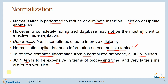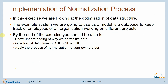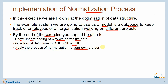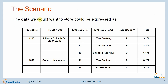In this exercise we are going to look at the optimization of a data structure. The example system we will use as a model is a database to keep track of employees of an organization working on different projects. By the end of this exercise you should be able to explain why we normalize data, give formal definitions of first, second, and third normal form, and be confident enough to apply the process of normalization to your own project.